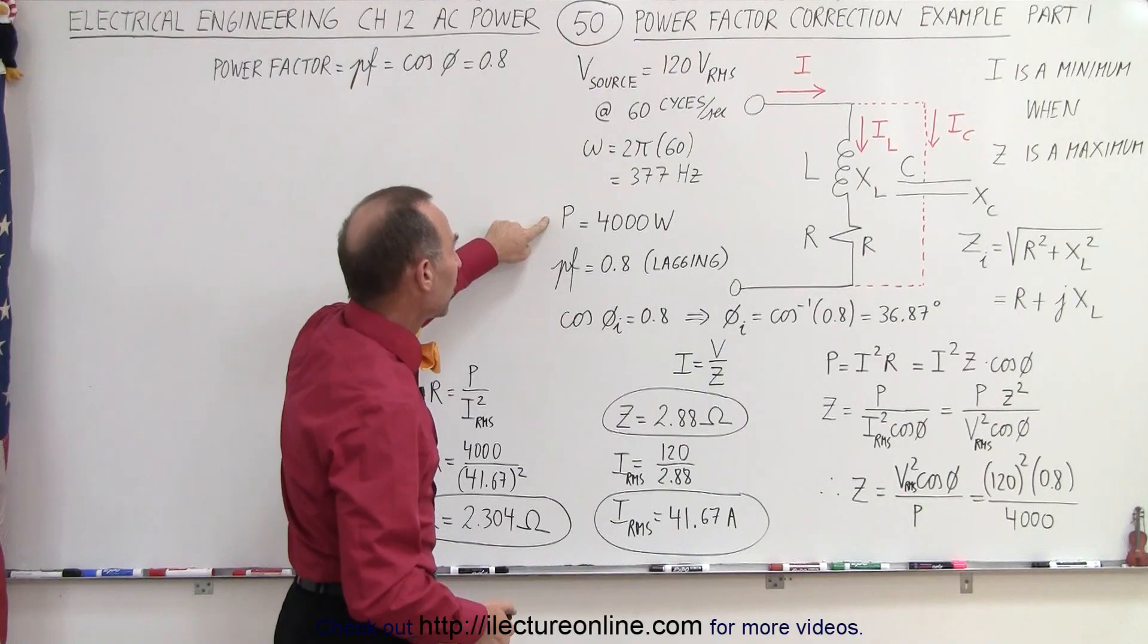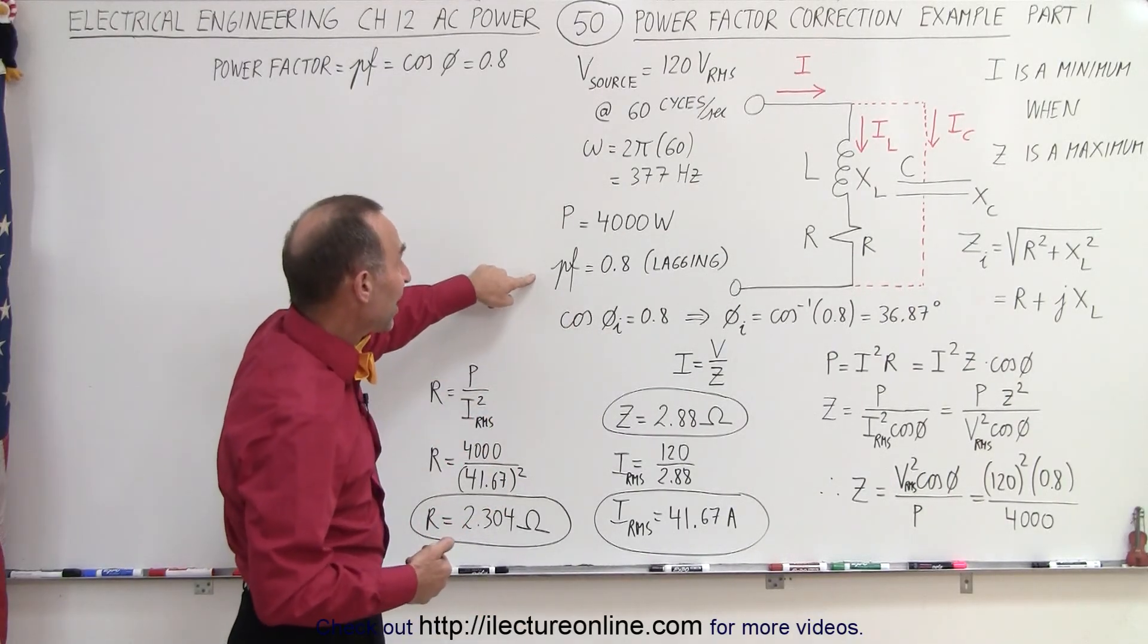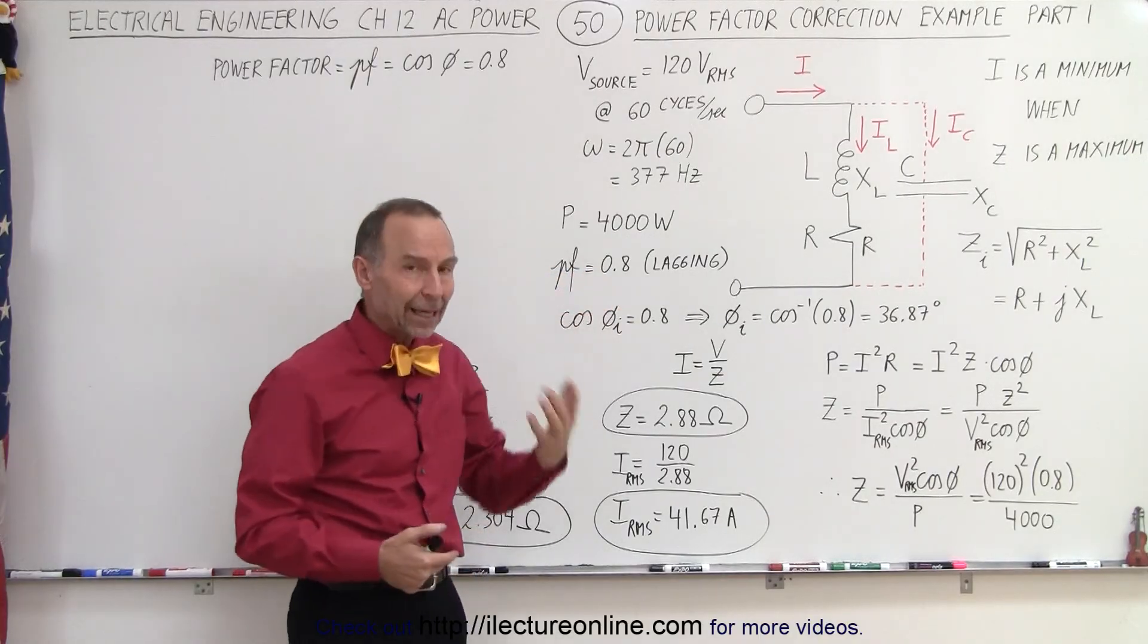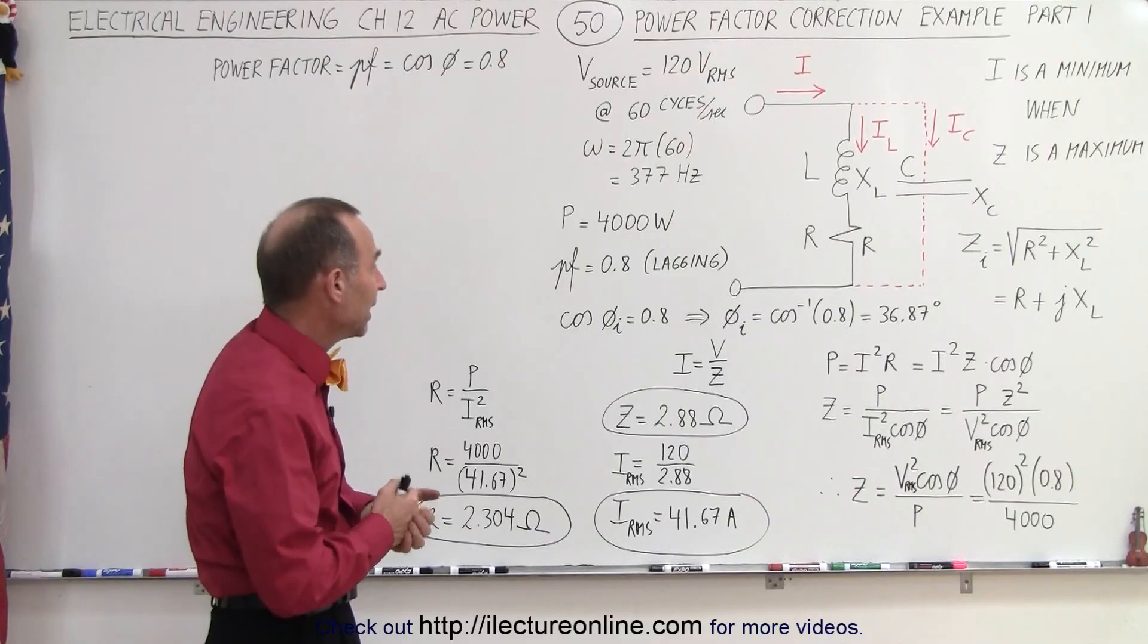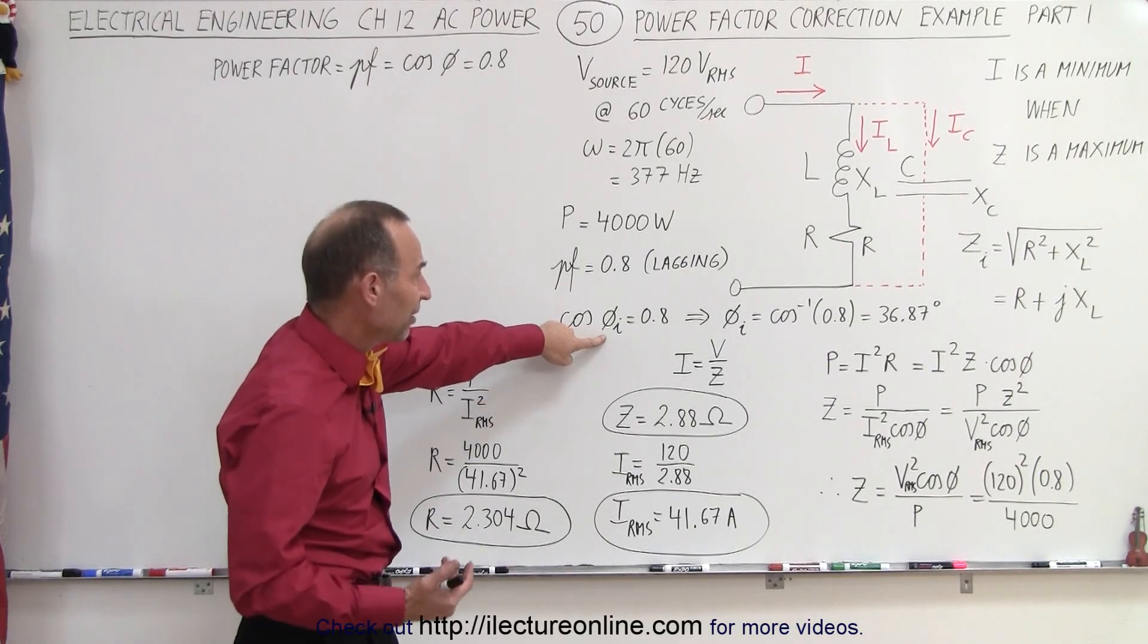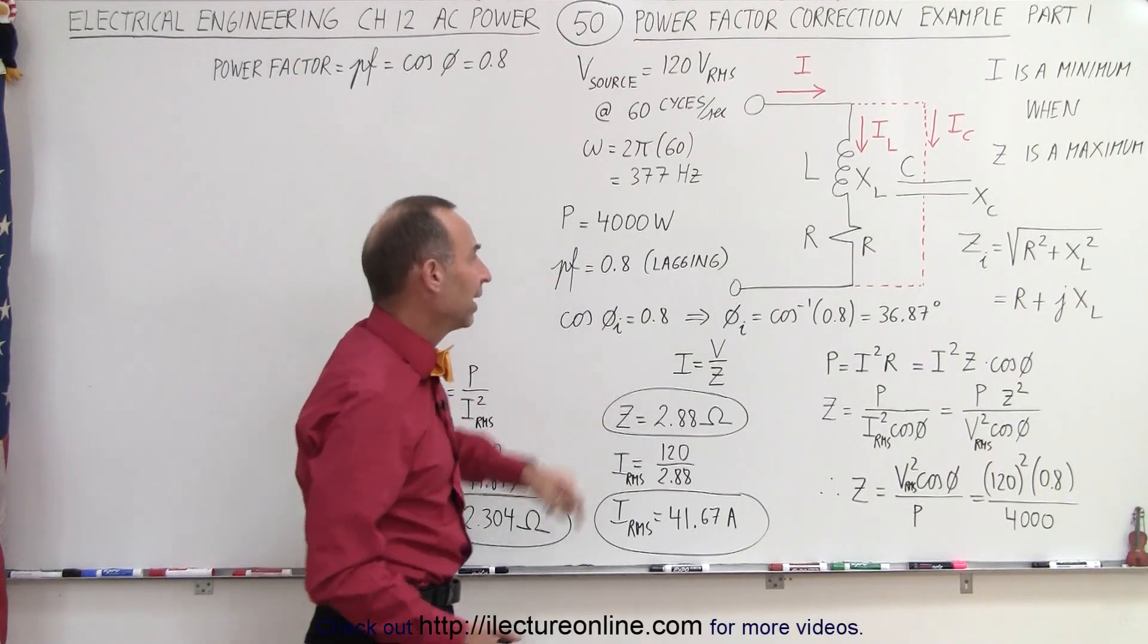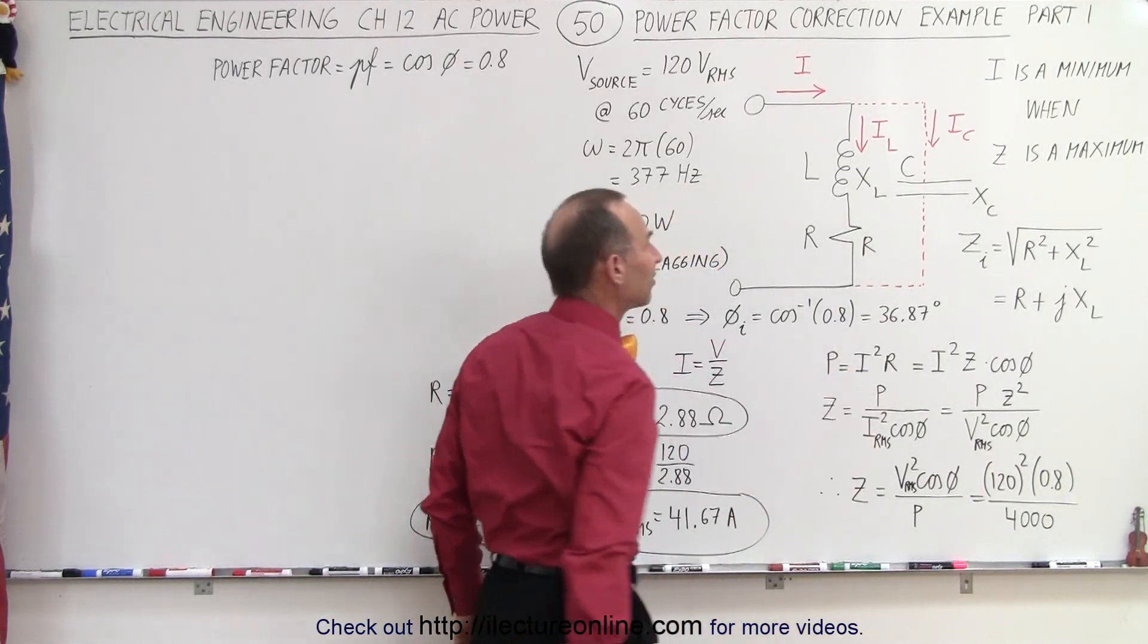Let's say the power requirement is 4000 watts and our circuit had a power factor of 0.8, and that would be a lagging power factor since it's an inductive circuit. That means the current would be lagging. We can say that the cosine of the initial phase angle is 0.8, and therefore we can calculate the initial phase angle, which is 36.87 degrees.